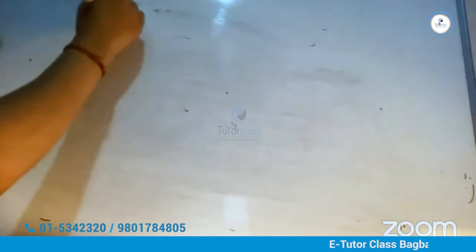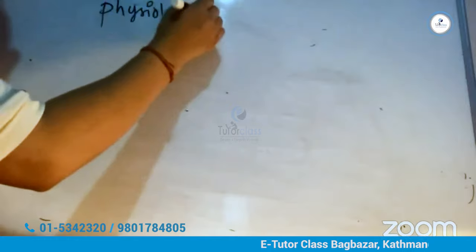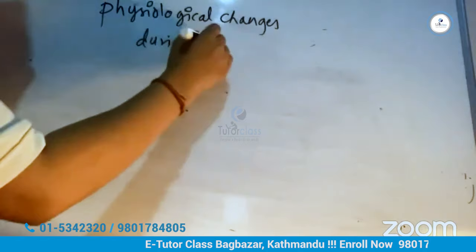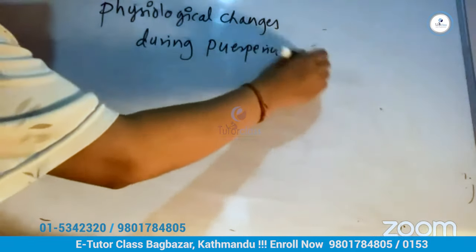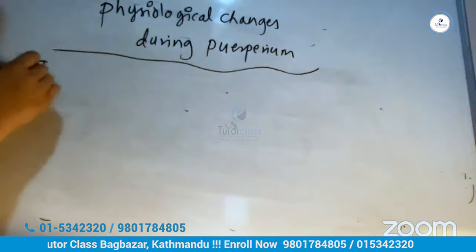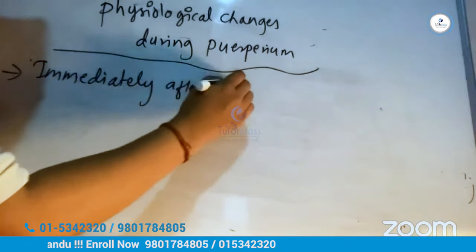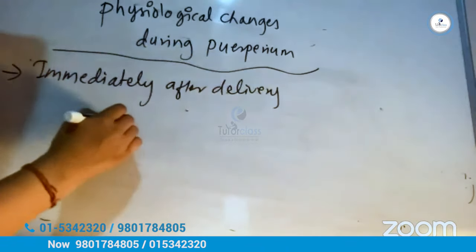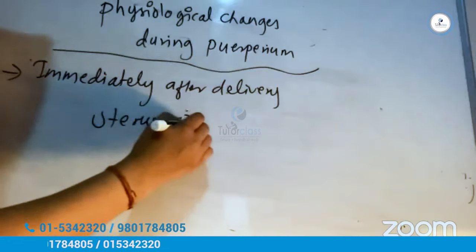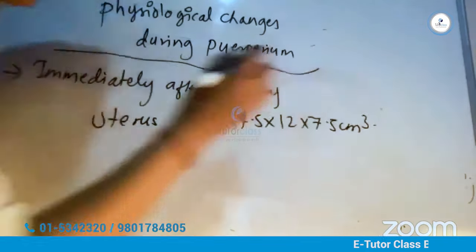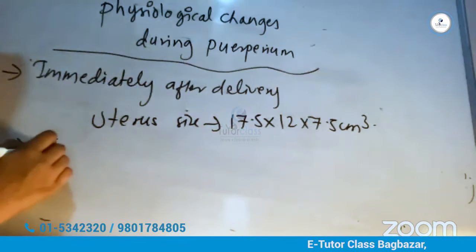The physiological changes during the puerperium: immediately after delivery, the uterus size is checked. The dimensions are 17.5 cm by 12 cm by 7.5 cm.